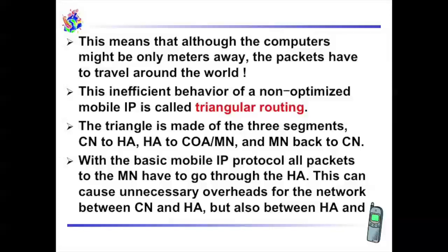This inefficient behavior of a non-optimized mobile IP is called triangular routing. The triangle is made of three segments: CN to HA, HA to CoA/MN, and MN back to CN.